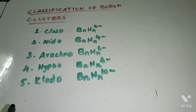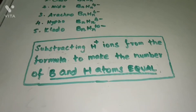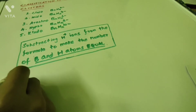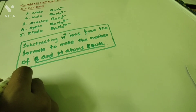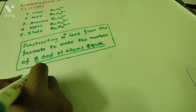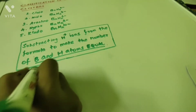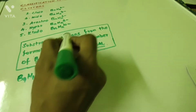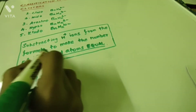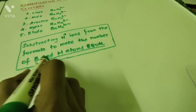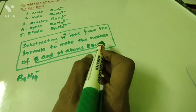Now I am going to tell you an easy method to find the boron cluster type. The method involves subtracting H⁺ ions from the formula to make the number of boron and hydrogen atoms equal.